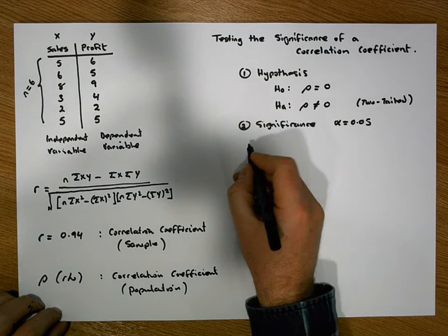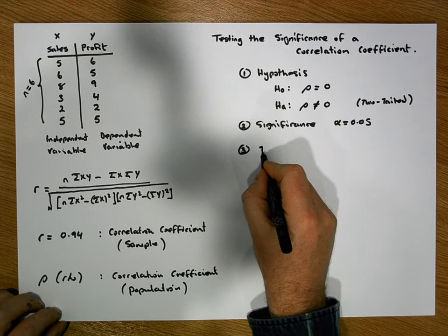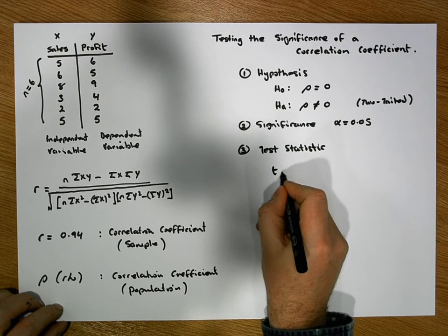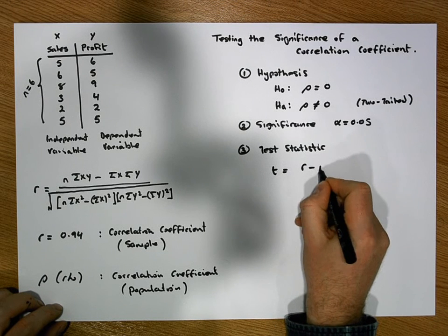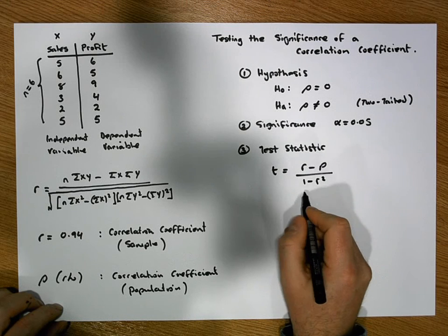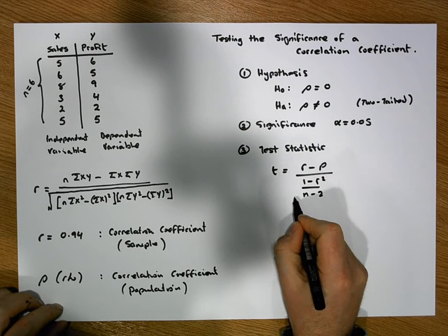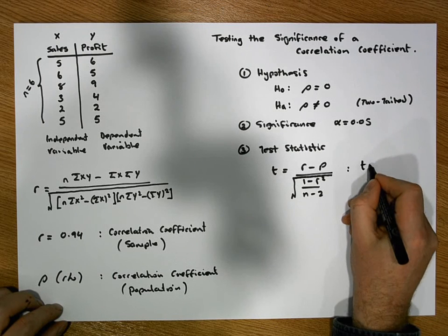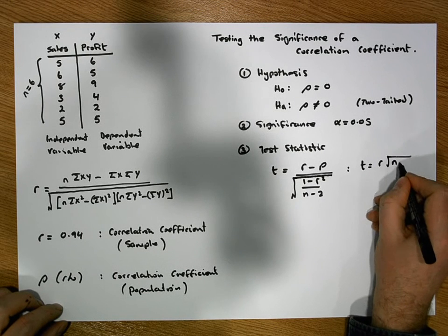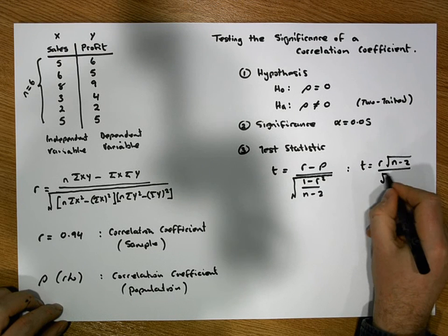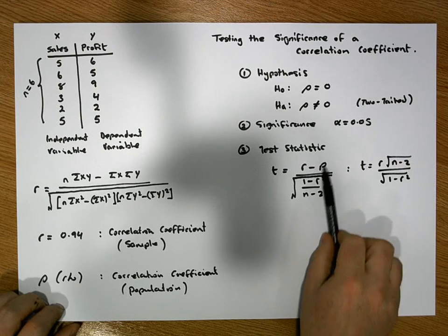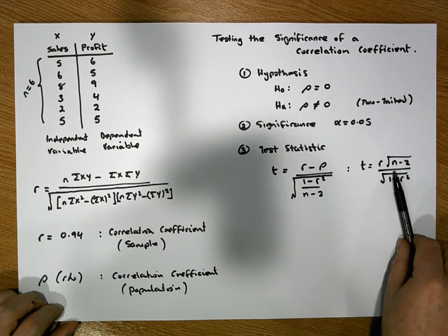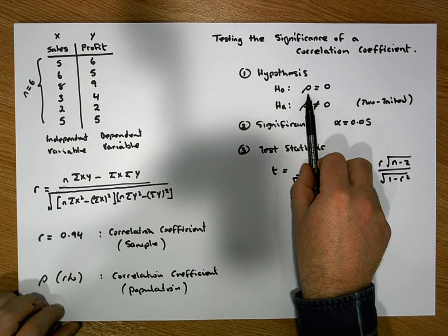Once we have our significance level chosen, the next step is to construct our test statistic. The test statistic is a t-statistic defined as: t equals r minus rho, divided by the square root of (1 minus r²) over (n minus 2). An alternative form is: t equals r times the square root of (n minus 2), all over the square root of (1 minus r²). The first form is the general form; the second is the specific form used when the null hypothesis states that rho equals zero.